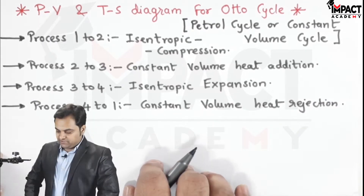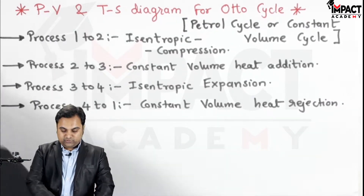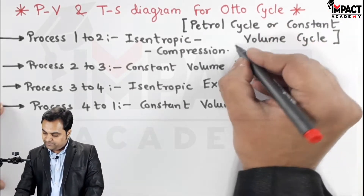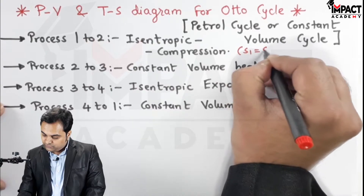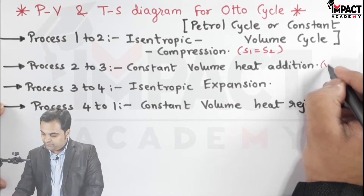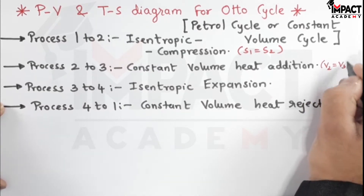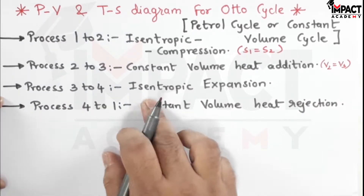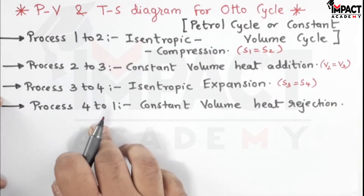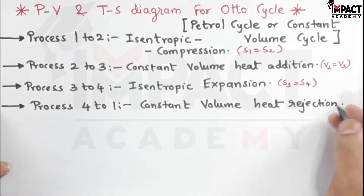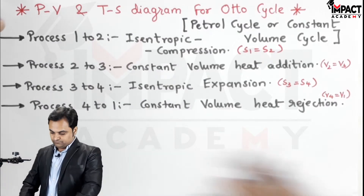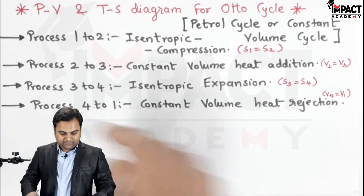The processes in the Otto cycle are: first, isentropic compression — isentropic means entropy remains constant, denoted by S, so S1 equals S2. Then constant volume heat addition where volume remains constant, so V2 equals V3. For process 3 to 4, isentropic expansion where S3 equals S4. Finally, 4 to 1 is constant volume heat rejection, so V4 equals V1. Now plotting the PV and TS diagram.